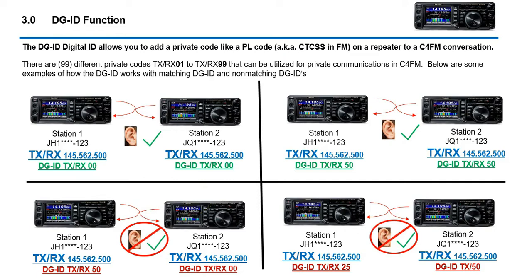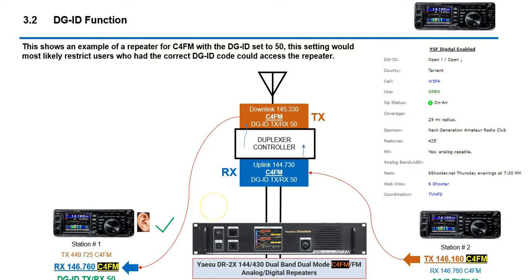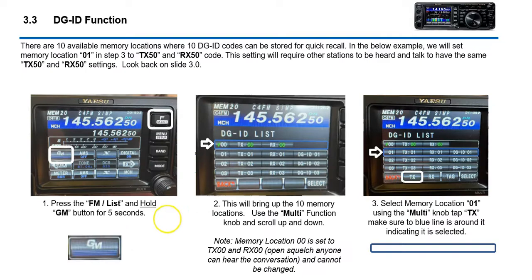DGID is essentially like a CTCSS code that goes into a repeater. On FM, you could use CTCSS with the same functionality — you have to have the code to hear the signal. On a repeater, C4FM most repeaters will probably be set to 00, which means everyone can hear and talk into the repeater. Theoretically you could set a repeater to code 50, which would restrict access to only users who know that code — kind of like a CTCSS code.